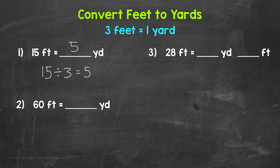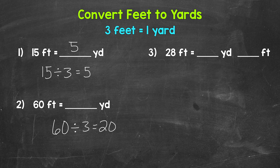So when we go from feet to yards, we divide by three. Let's move on to number two, where we have 60 feet. How many groups of three feet here? How many yards does 60 feet equal? We need to do 60 divided by three. 60 divided by three gives us 20. 60 feet equals 20 yards.